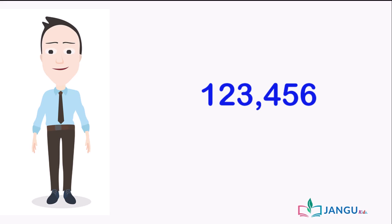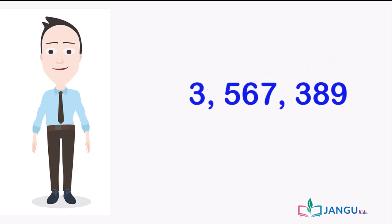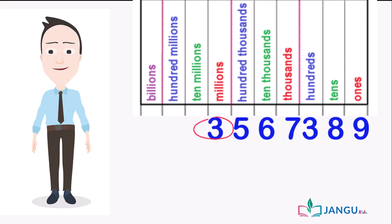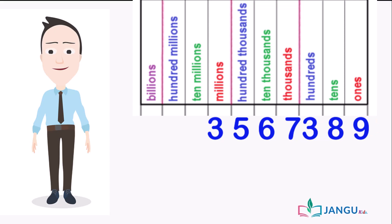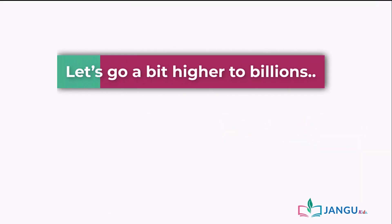Here we'll build up on this to learn how to count in millions, billions, and even trillions. Can you write this number in words? Let's do it together. First, we need to draw a place value chart and place each digit in the chart from left to right. So we have three million, five hundred thousand, sixty thousand, seven thousand, three hundred, eighty tens, and nine units. Simply put, the number is three million, five hundred and sixty-seven thousand, three hundred and eighty-nine.